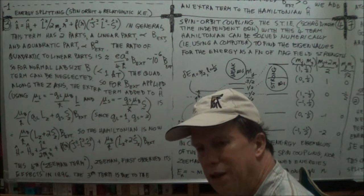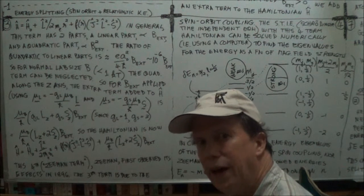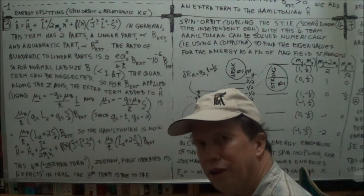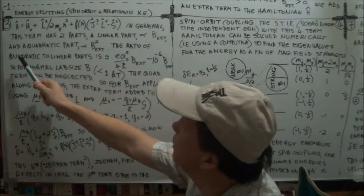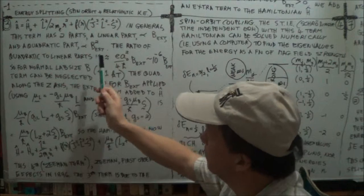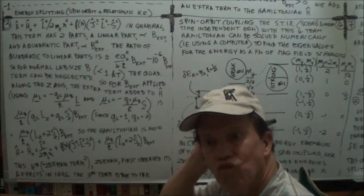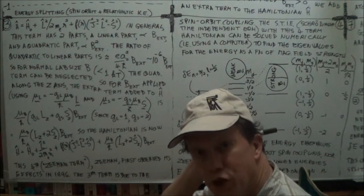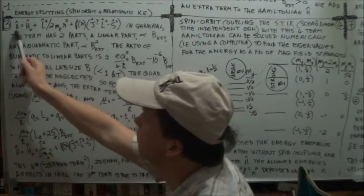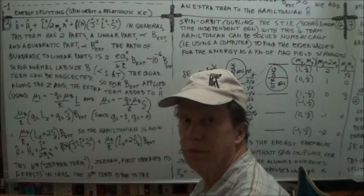In the type of experiments you do in the lab, you can quite effectively just forget about this quadratic term, the second part of the Zeeman term that you would add or perturb the Hamiltonian with.